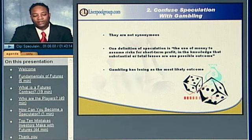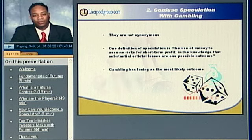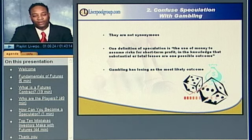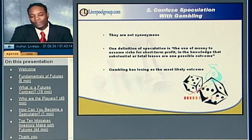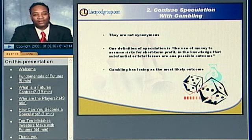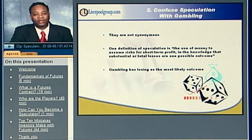One definition of speculation is the use of money to assume risk for short-term profit, with the knowledge that substantial or total losses are only one possible outcome. Even though you know you can lose, it's only one possible outcome. Whereas with gambling, there is essentially only one guaranteed outcome — losing. On rare occasions somebody may make money, but 90% of people give money back to casinos. That's how many people treat futures — as a huge casino. There's an opportunity to trade futures in a very calculated, intelligent way as a speculator, because speculation and gambling are not synonymous.